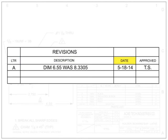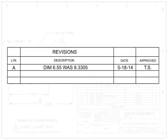The date and approved columns show when the change was made and who approved it, helping to track the history of changes to the blueprint. Other information sometimes contained in this area includes the zone where the change can be found, other signatures required to approve the change, and the serial number to indicate when the part change became effective.